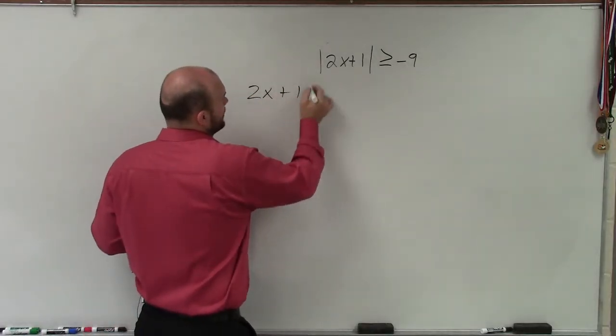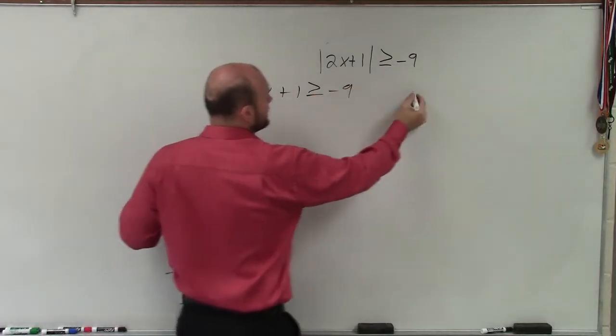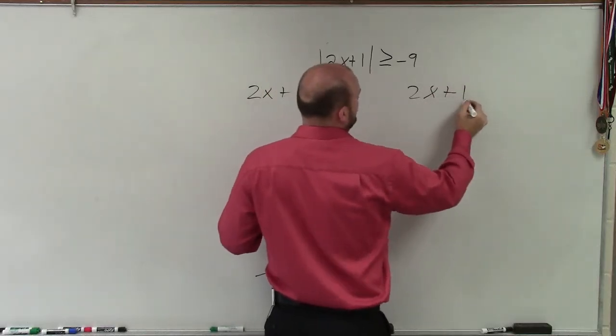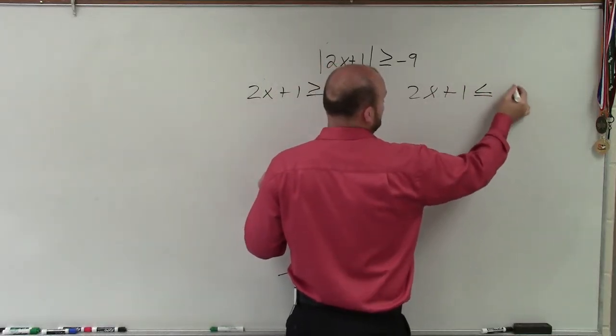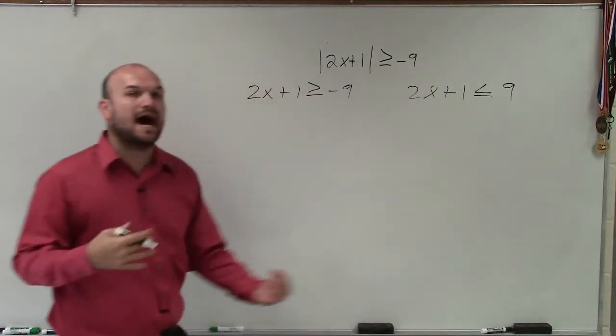I have 2x plus 1 is greater than or equal to negative 9, and 2x plus 1 is less than or equal to positive 9, right? Because we're going to do the opposite in both cases.